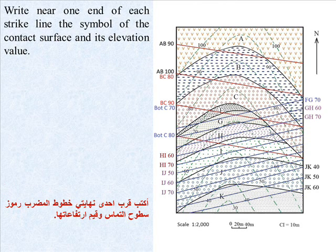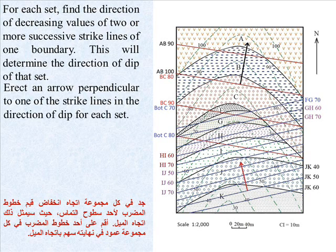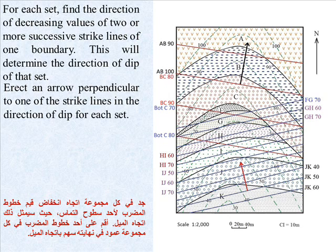Write near one end of each strike line the symbol of the contact surface and its elevation value. For each set, find the direction of decreasing values of two or more successive strike lines of one boundary — this will determine the direction of dip of that set. Draw an arrow perpendicular to one of the strike lines in the direction of dip for each set.